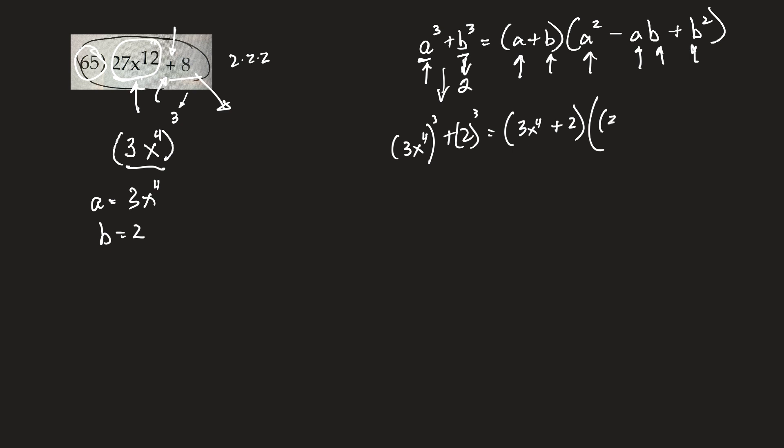Okay, a squared, so 3x to the 4th squared minus a, 3x to the 4th, times b, b was 2, plus b is 2 squared bracket.